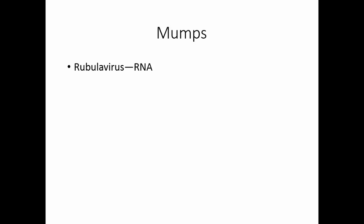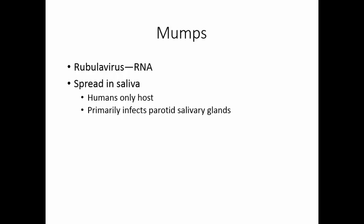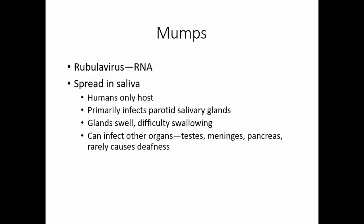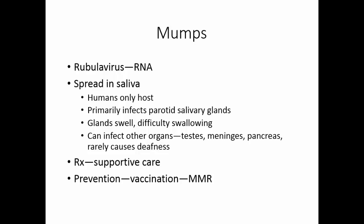Mumps is caused by a rubulavirus, an RNA virus spread in saliva. Humans are the only known host. The virus primarily infects the parotid salivary glands, causing swelling and difficulty swallowing. The disease typically runs its course in about a week. The virus can infect other organs; in males who contract it after puberty, it may infect the testes and cause sterility. In rare cases, mumps has caused meningitis, pancreatitis, and very rarely deafness. Treatment is supportive care and prevention is through the MMR vaccine.